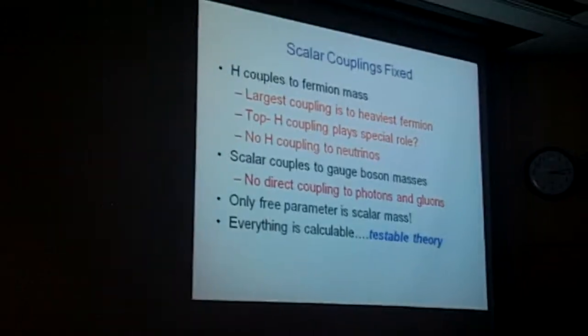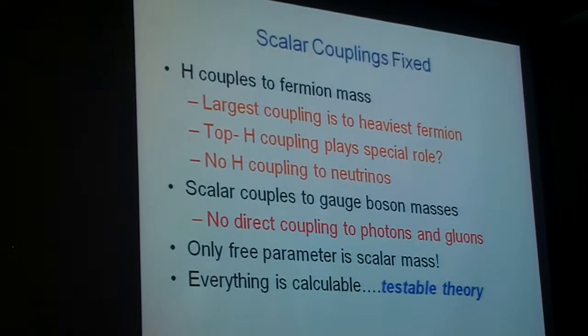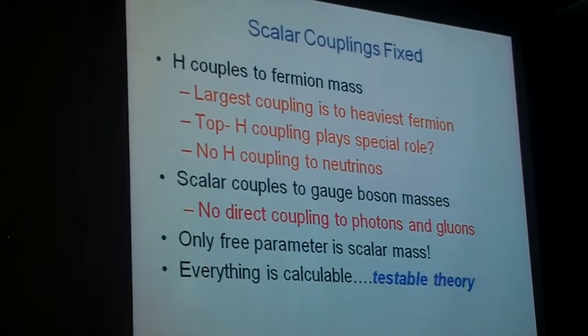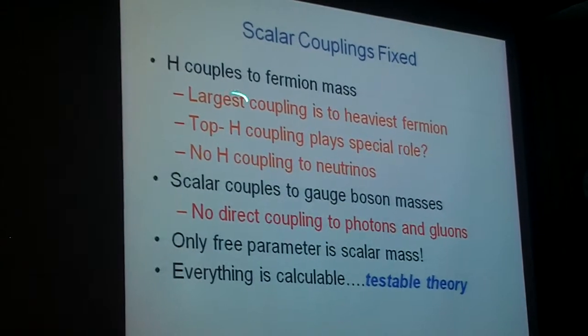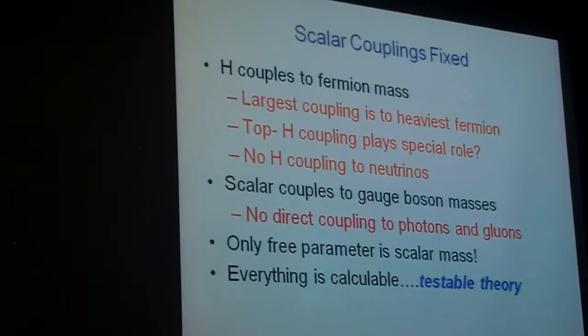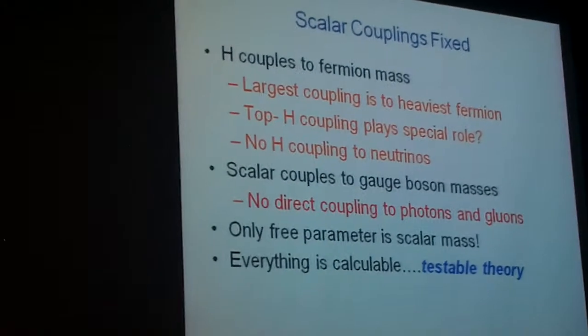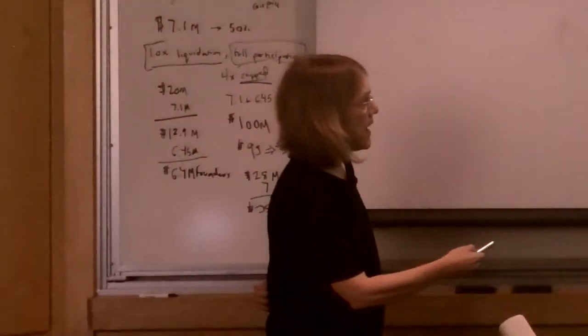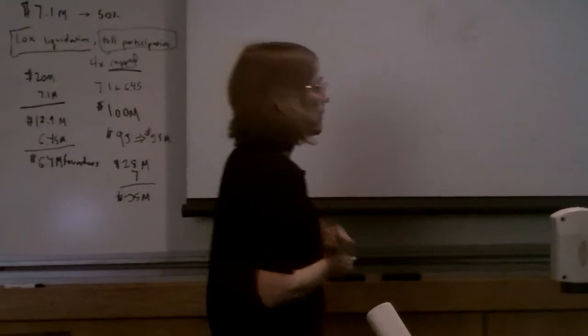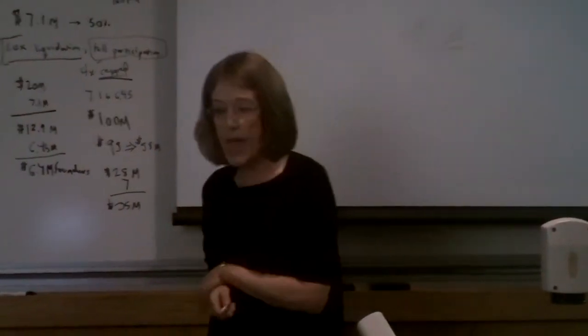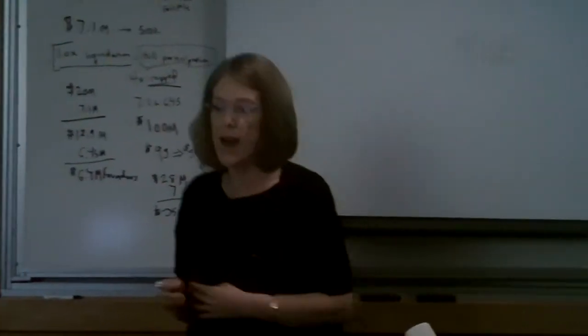So the scalar couplings are fixed. This particle H, the scalar, couples to fermion mass. So the largest coupling is to the heaviest fermion. So when we look for this particle, we're going to look for it decaying to B quarks if it's relatively light, or to W and Z bosons if it's a little bit heavier. So the heaviest fermion is the top quark, so the top scalar coupling plays a special role because it's essentially one. And the scalar doesn't couple to neutrinos because the neutrinos are approximately massless. The scalar couples to gauge boson masses, so it doesn't couple directly to photons and gluons. So only one free parameter, this scalar mass. So I can calculate everything to as many loops as I have strength to calculate them. So everything's calculable, and that means that this is a testable theory. It's a theory we can test. We can falsify. We can verify.